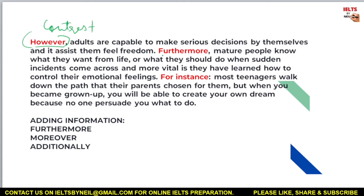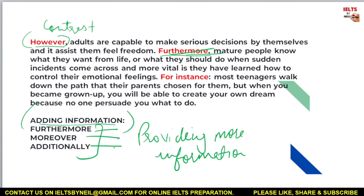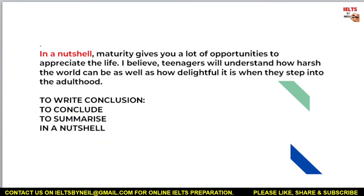Now look at this linking word in the second body paragraph: 'furthermore.' I'm using it to provide additional information. Whenever you want to add more information, you can use 'furthermore,' 'moreover,' or 'additionally.' You can use any of these three words interchangeably. So whenever you are adding more sentences or further information, use furthermore, moreover, or additionally.